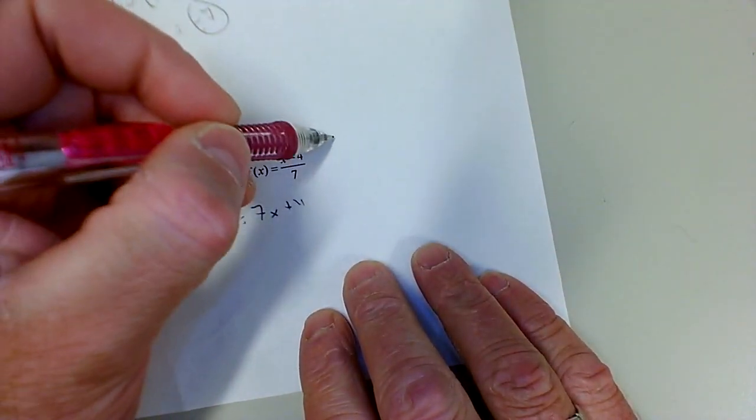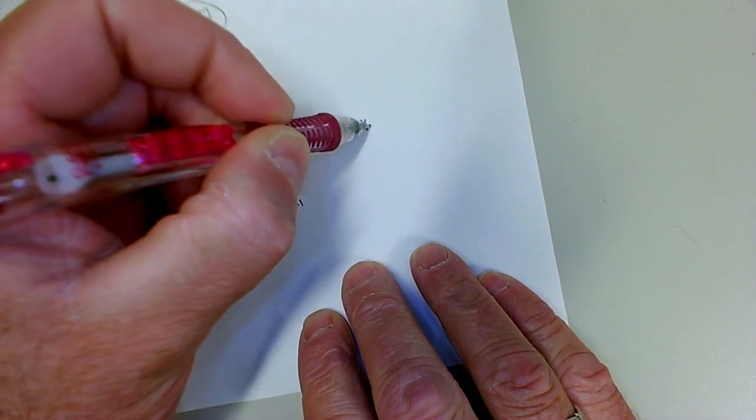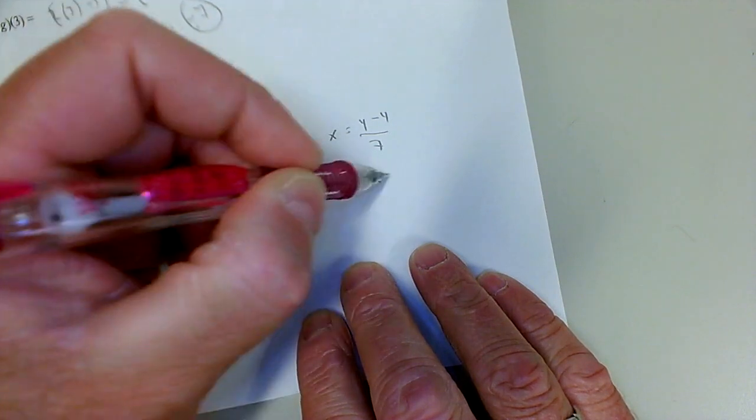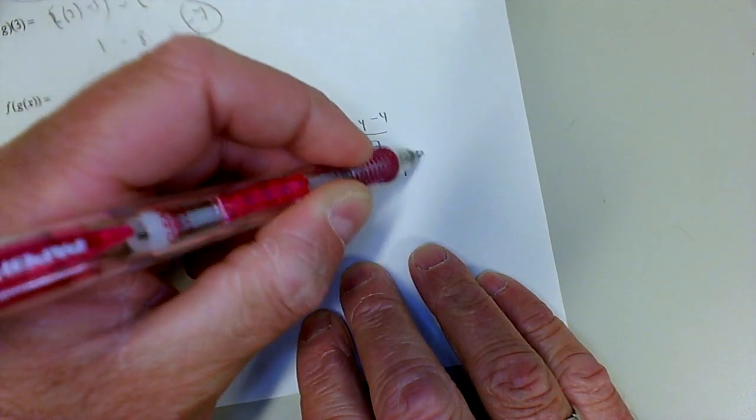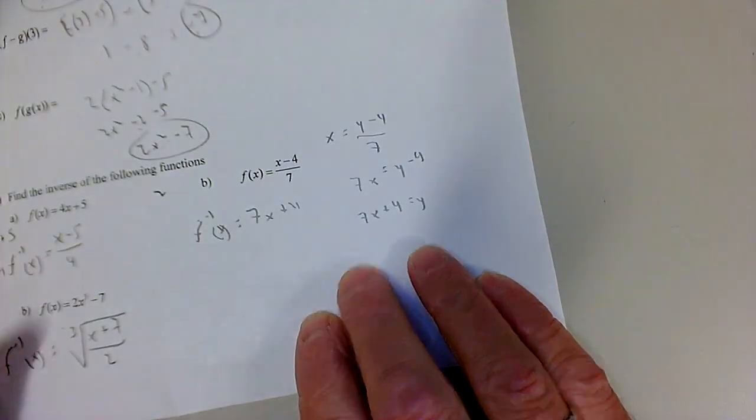Same idea here. This is linear, believe it or not, because you've got the x in the numerator. So, I would get rid of the 7 first by multiplying, then add 4, pretty straightforward.